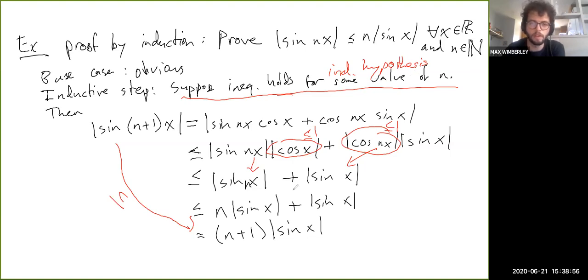So we use the inductive hypothesis in going from this step to this one. This is by the inductive hypothesis, right? Because in making this step, we were saying that absolute value of sine of nx is less than or equal to n absolute value of sine of x. That's what we assumed up here as the inductive hypothesis, okay? So we use the inductive hypothesis to show that the same statement is true when you increment n by one, and that's an argument by induction, okay? So you should hopefully be familiar with that to some extent.